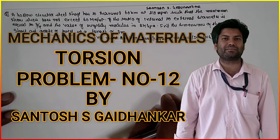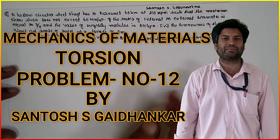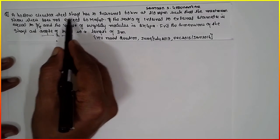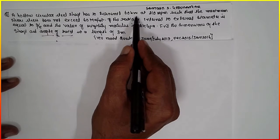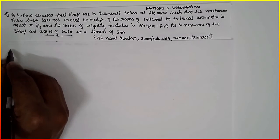I am Satyash Gajandhwar. Today I am teaching mechanics of material, a torsion problem. A hollow circular steel shaft has to transmit 60 kW at 210 rpm.